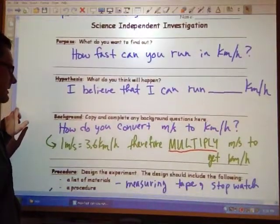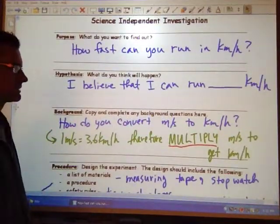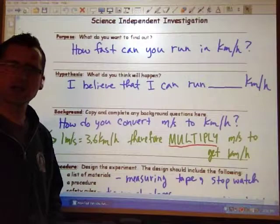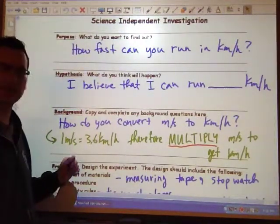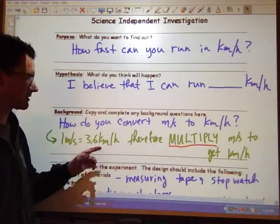The background: how do you convert meters per second to kilometers per hour? I'm just going to give you the answer here. We'll be discussing this later, but 1 m/s is equivalent to 3.6 km/h.